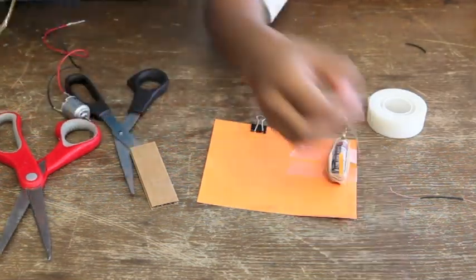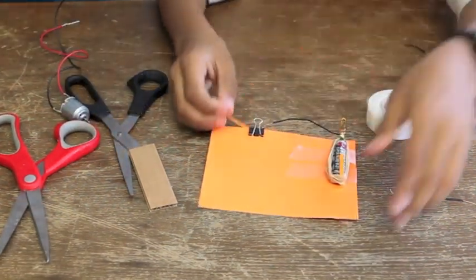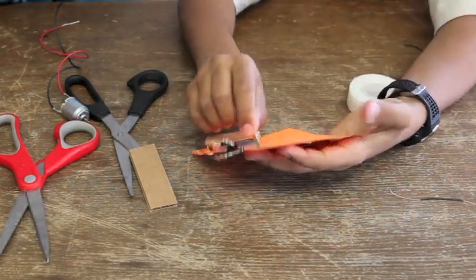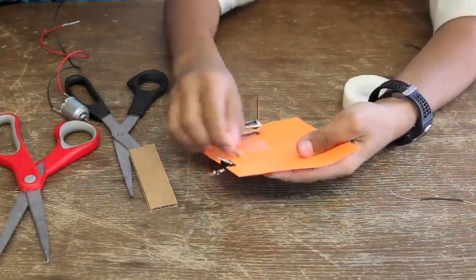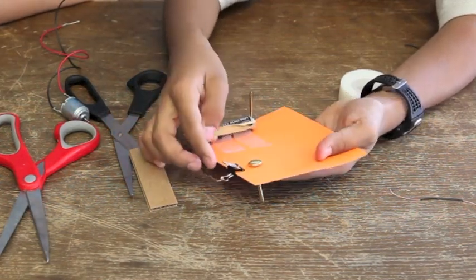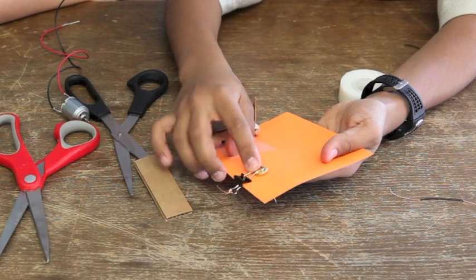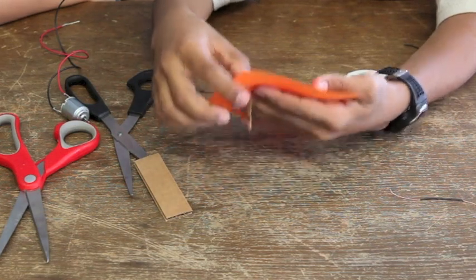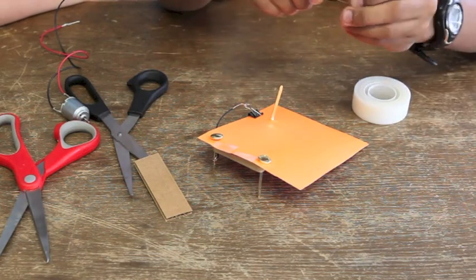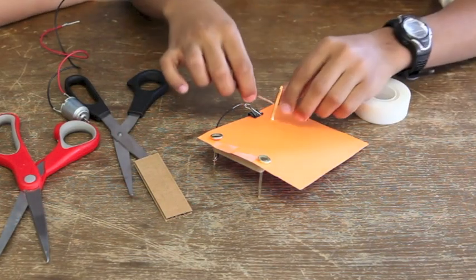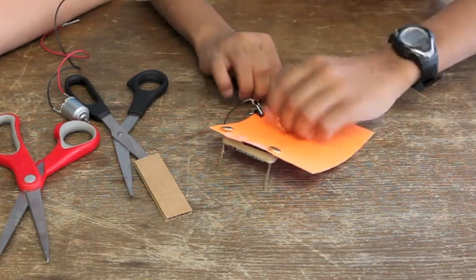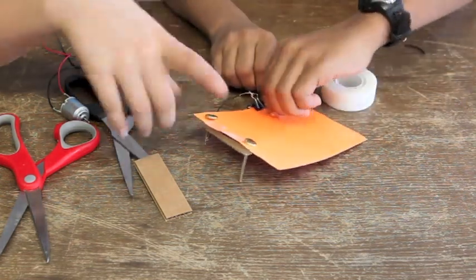And then you take another fastener. You put it next, right in front of the clip. So when you turn it on, it hits the paper clip. And then, you take the wire and you attach it to the fastener. That's the second wire.